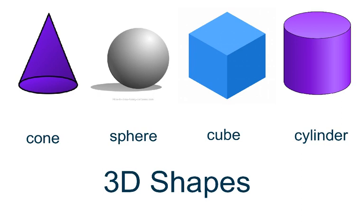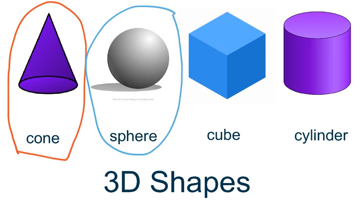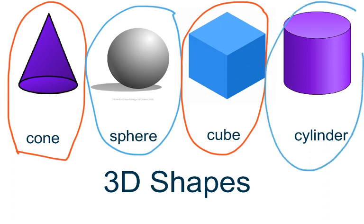Here are the four three-dimensional shapes that we will be learning in this chapter. The first one is called a cone. The next one is a sphere. And then we have a cube. And lastly, a cylinder. These are the four shapes that you are going to be able to identify, name, and describe in this chapter.